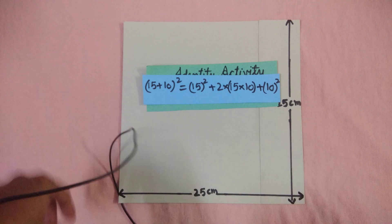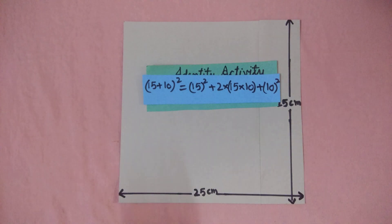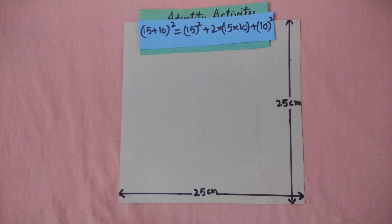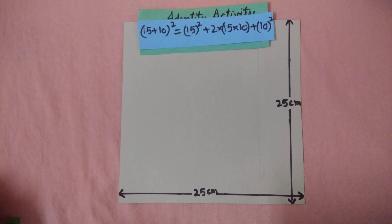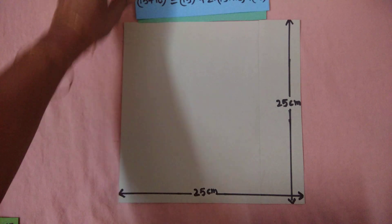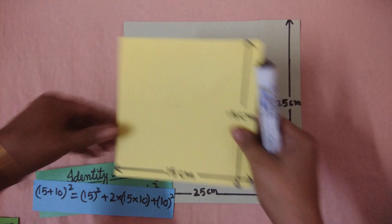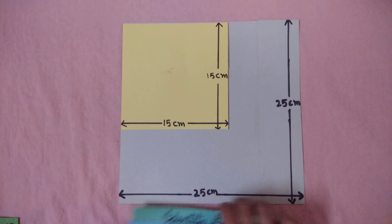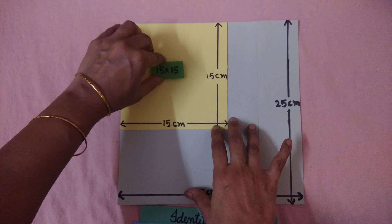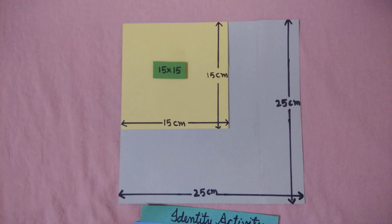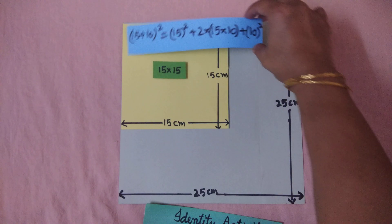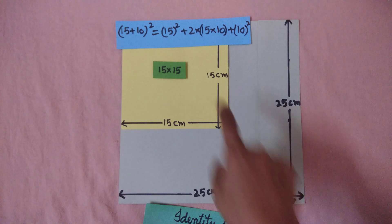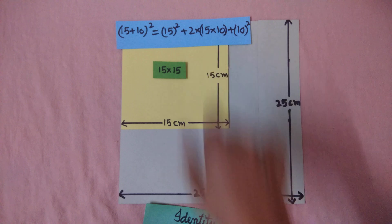Next is 15 squared, which means a 15 by 15 cutout. So first we will take the 15 by 15 cutout. This is the cutout of 15 by 15. So I have taken one cutout of 15 by 15 according to the identity, that is a squared means a 15 by 15 cutout.